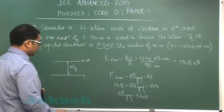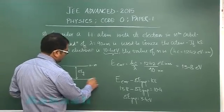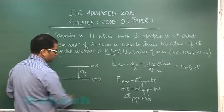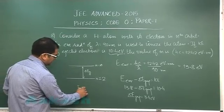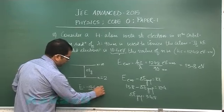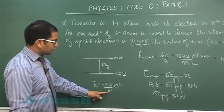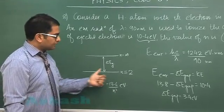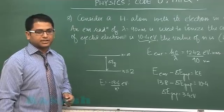So that means initially the hydrogen atom was at n equals 2, because energy is minus 13.6 by n square electron volts, the famous expression we know. So when we put n equals 2, the initial energy of minus 3.4 electron volts would be achieved.